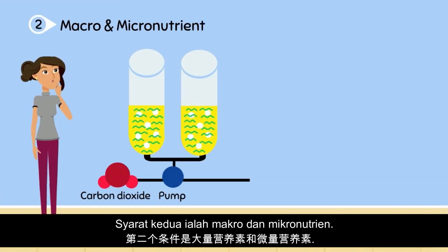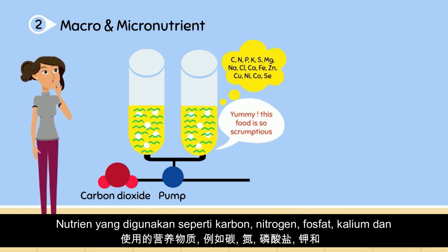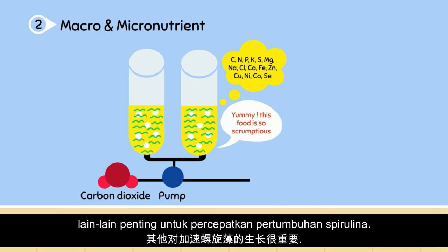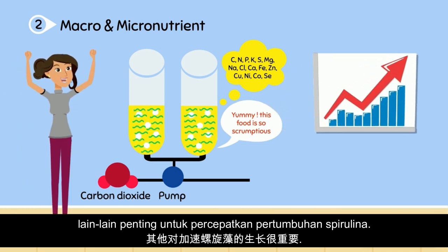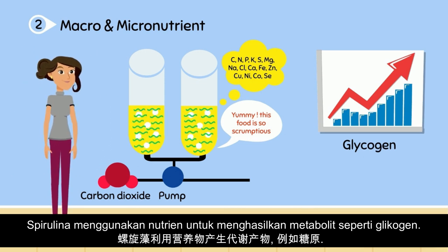The second requirement is macro and micronutrients. Nutrients used to feed spirulina — such as carbon, nitrogen, phosphate, potassium, and others — are important for rapid growth. During the process, spirulina consumes the nutrients, producing a byproduct which is glycogen.